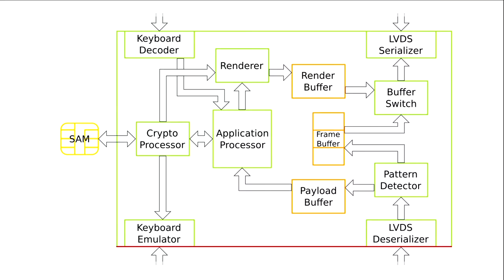The signal will then go through a frame buffer for clock reasons, then through a buffer switch — which in this case also does nothing because there's no payload to replace — and then back to a serializer. The interesting thing is that at no point does this high-bandwidth display data signal — which may contain other sensitive information I don't want the interceptor to know — touch anything apart from some relatively simple digital logic. It's basically just a bunch of shift registers, pattern matching, and a couple of buffers.